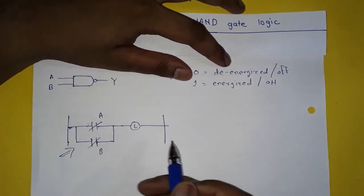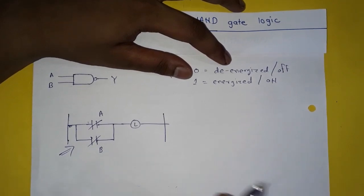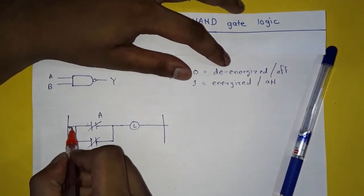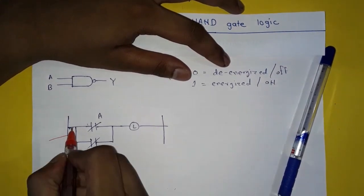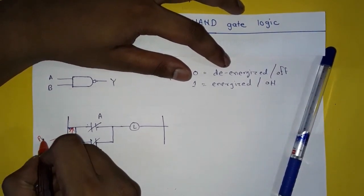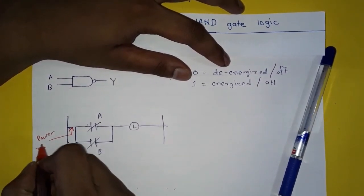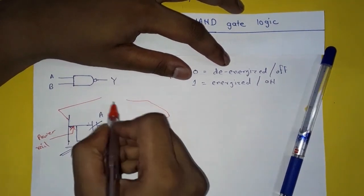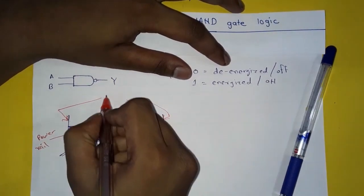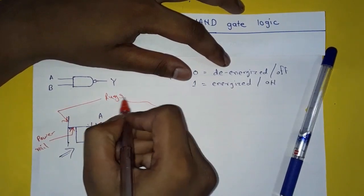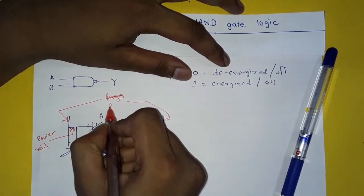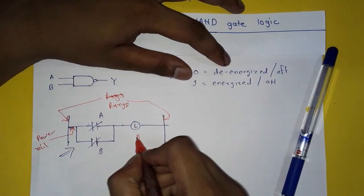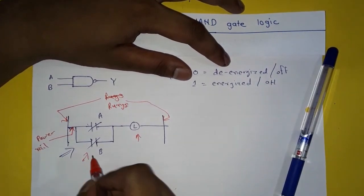In the ladder diagram, this is the power rail and these are the rungs. This is our output and these are the inputs.